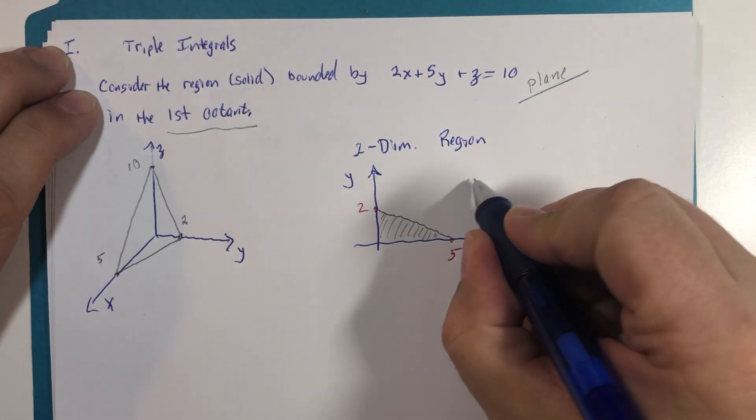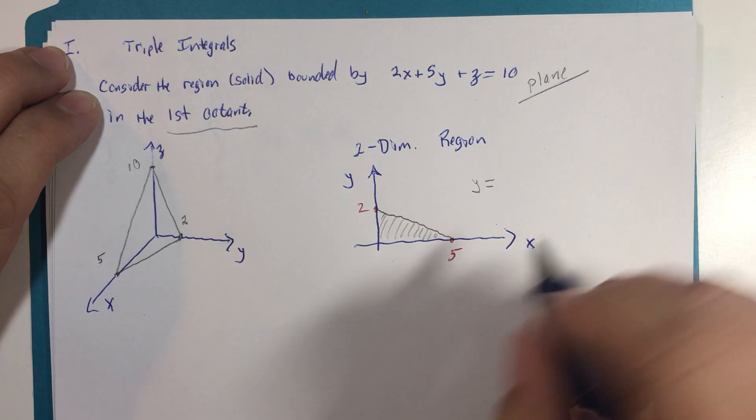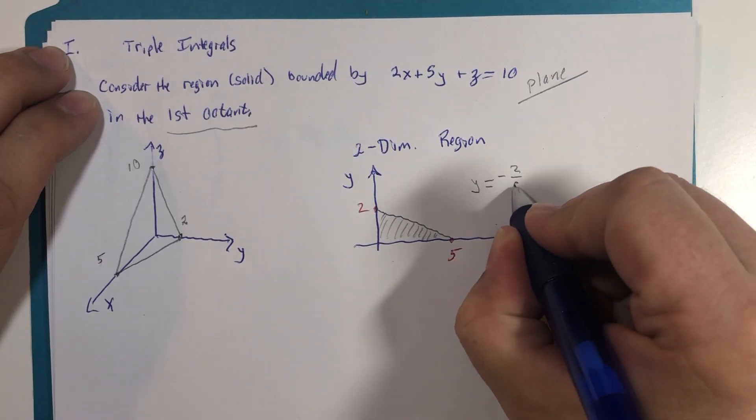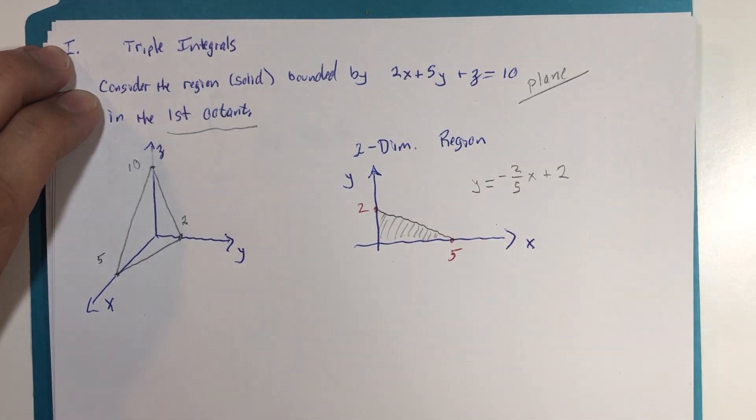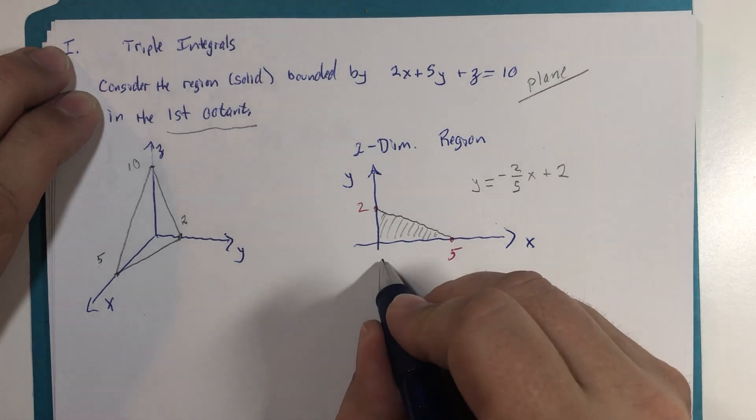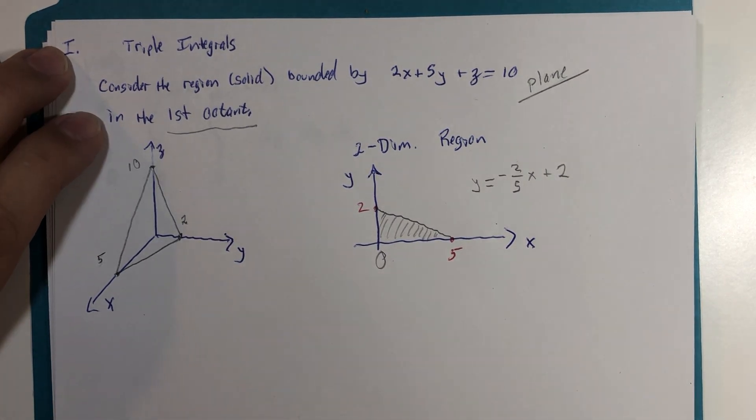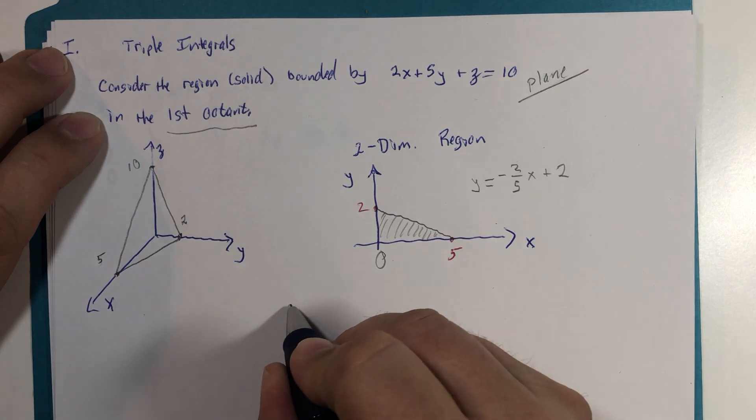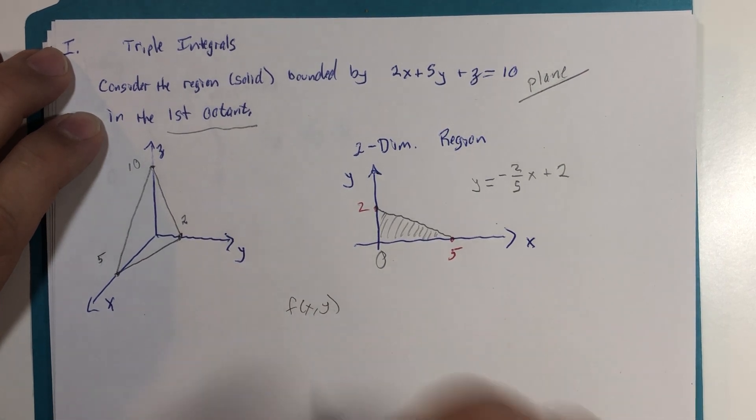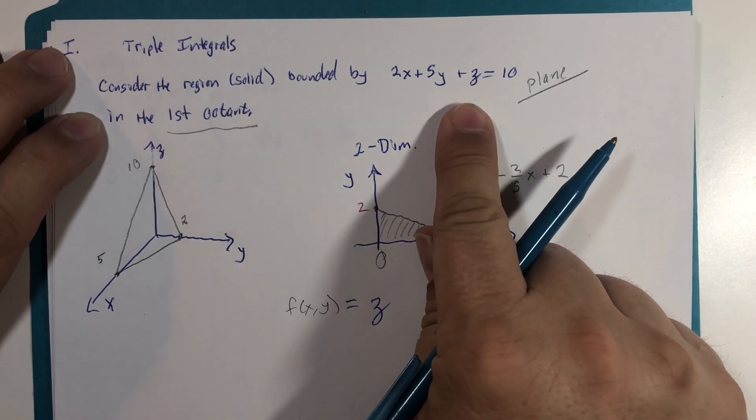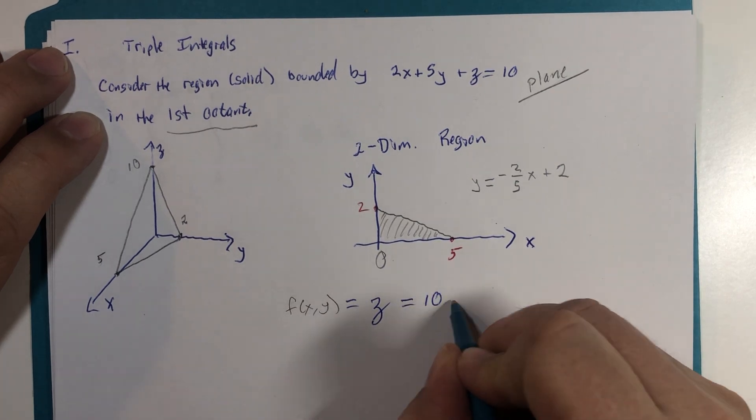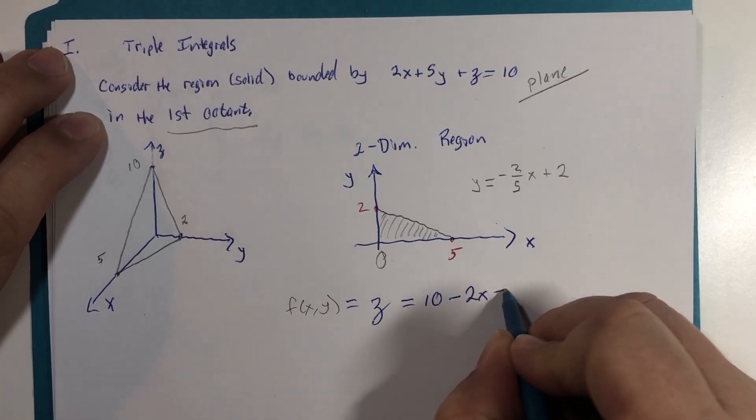The line has an equation, y equals slope is negative 2 fifths times x plus the y-intercept. And x goes from 0 to 5. So if I set up my double integral, I have the region to look at. Then I need a third dimension, the function of x and y, which is what z equals, if we were to solve this for z equals, which would be 10 minus 2x minus 5y.